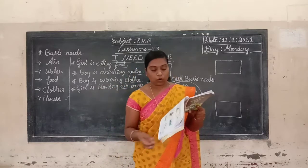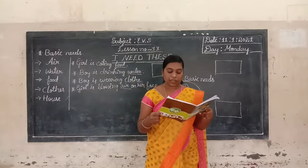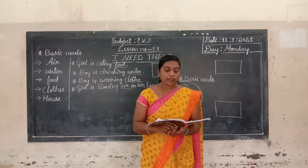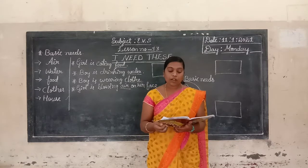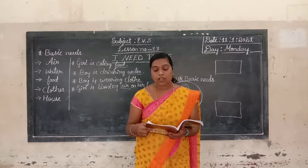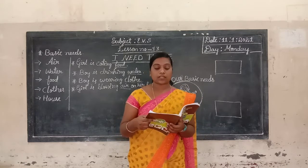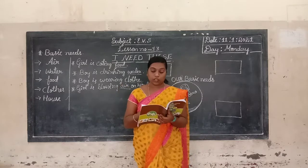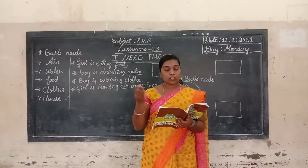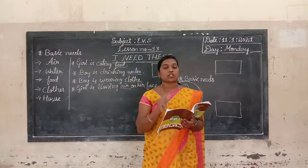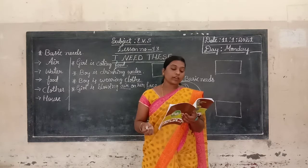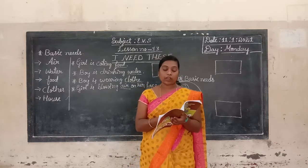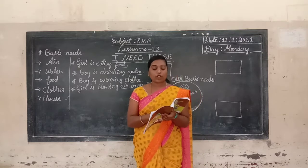Children, next we go to page number 84. In your textbook there are some pictures of things. Draw a line on the things that are very essential for you. Here in the first picture there is water — a pot of water. It is very essential.